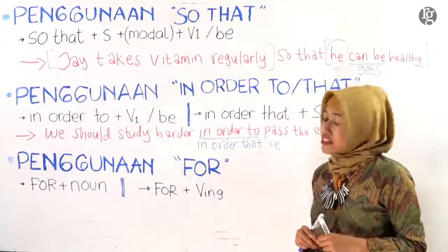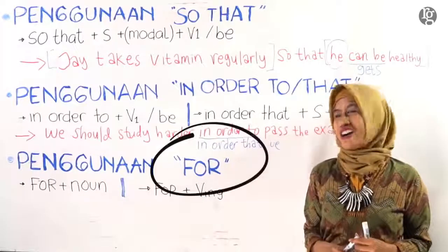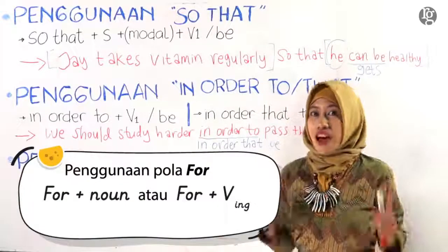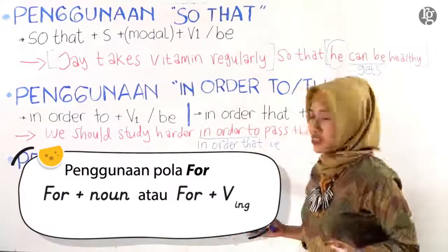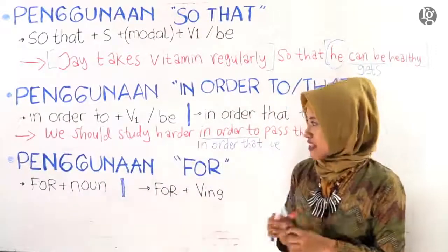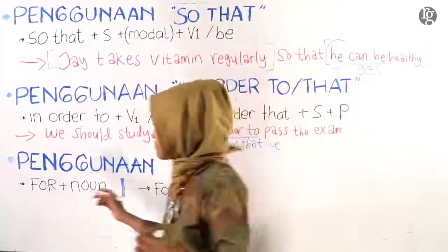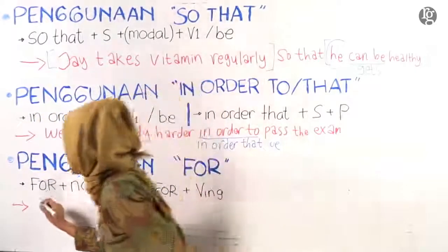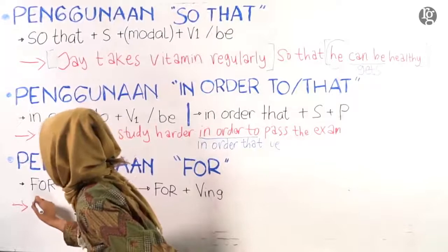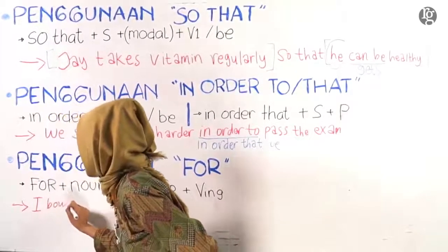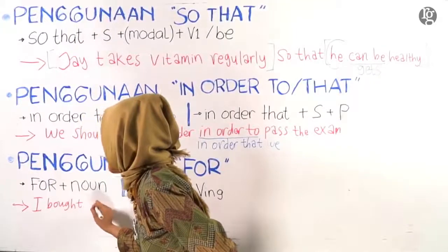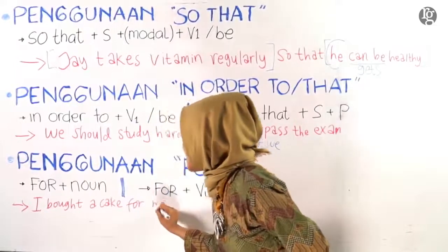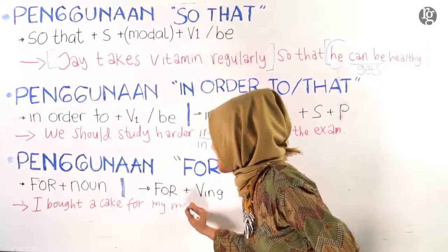Kita ke penggunaan konjungsi selanjutnya yaitu penggunaan 'for'. Untuk 'for', bentuknya bisa diikuti dengan noun atau kata benda, bisa juga diikuti dengan verb -ing. Kakak akan tulis contohnya masing-masing untuk bentuk yang berbeda. Yang pertama, untuk bentuk 'for' diikuti kata benda atau noun. Contohnya: I bought a cake for my mother.